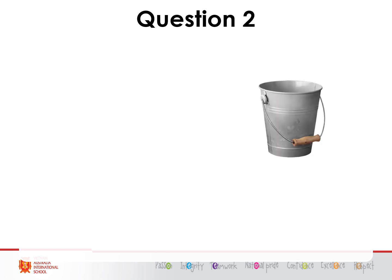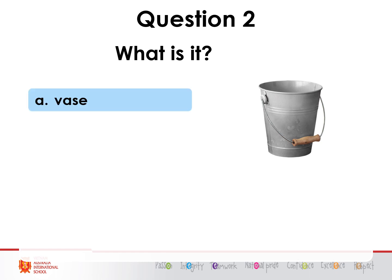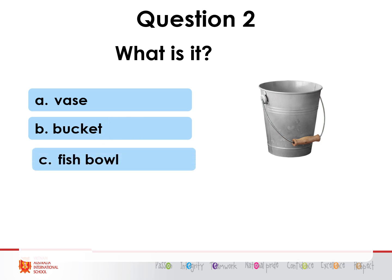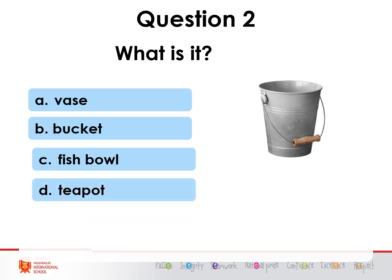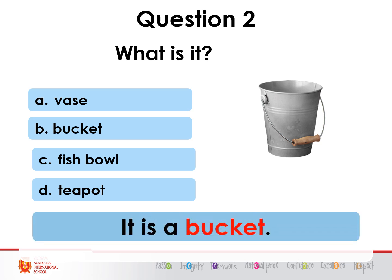Question two — what is it? A) a vase to keep your flowers in, B) a bucket to carry water, C) a fish bowl for your fish, D) a teapot for drinking tea from. What do you think? Three seconds: three, two, one. That's right, it's a bucket. It is a bucket.